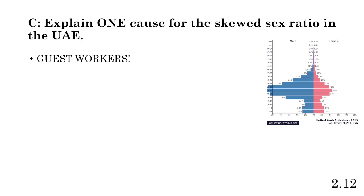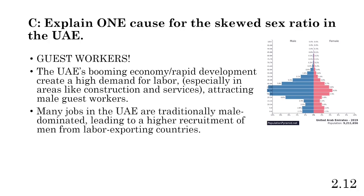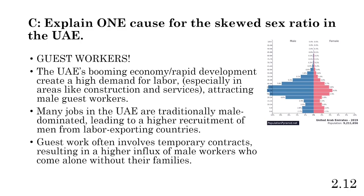According to Ravenstein's laws of migration, most international migrants are male and travel for economic purposes. The UAE has a booming, rapidly growing economy creating high demand for labor, particularly in construction, services, and manufacturing, attracting male guest workers. Many jobs are traditionally male-dominated — women will enter the workforce later in the country's development. Guest workers typically have temporary contracts and come alone without their families, which is why we don't see an increase in females.